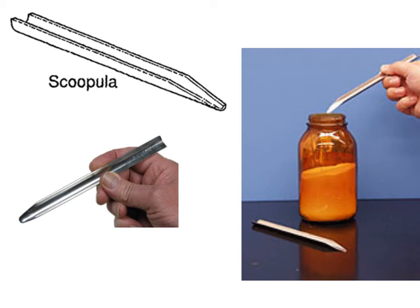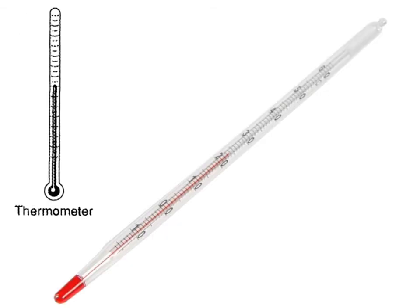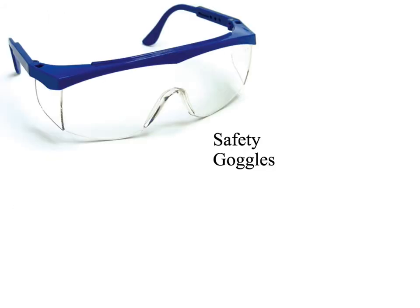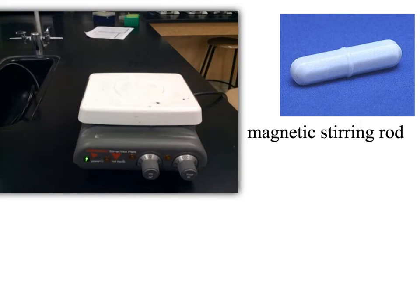This one has a name that's pretty indicative of what it does — it's called a scoopula. It's a metal half-circle shape and we use it to scoop out chemicals. The scoopula is for scooping. A thermometer should be a gimme on your quiz — we all know thermometers are used to determine the temperature of something. Safety goggles you'll be using frequently in the lab — they protect your eyes. That is their function: they protect the eyes.